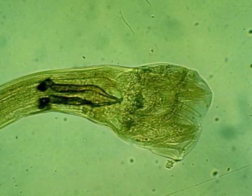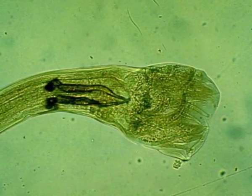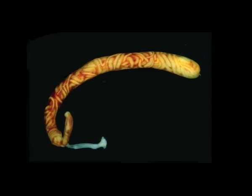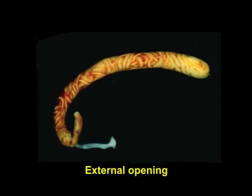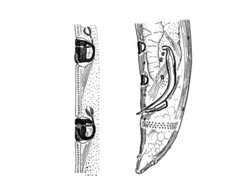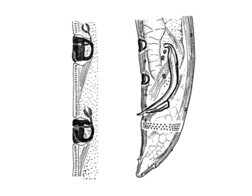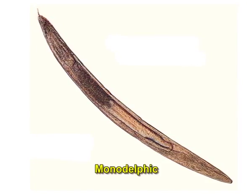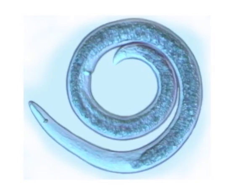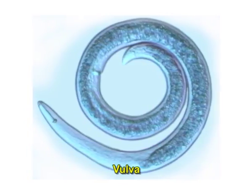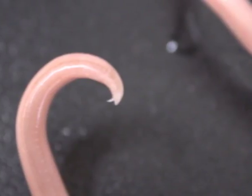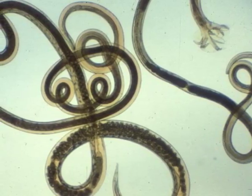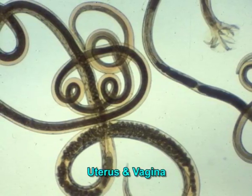The female reproductive system usually consists of two opposed tubular gonads (amphidelphic, didelphic gonad) — one extending anteriorly and the other posteriorly from the vulva. However, in some groups, the posterior or anterior gonad may be vestigial and non-functional. Forms with a single gonad (monodelphic) are not uncommon. Possessing one ovary located anterior to the vulva is termed prodelphic. The female gonad consists of a distal capsule followed by a germinal zone wherein oocytes develop, a growth zone, an oviduct, and the uterus and vagina.